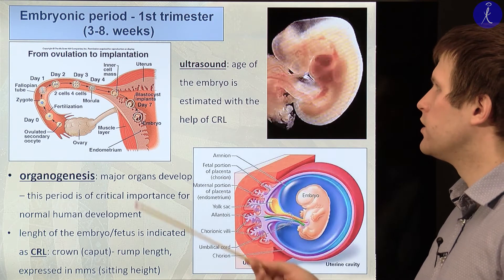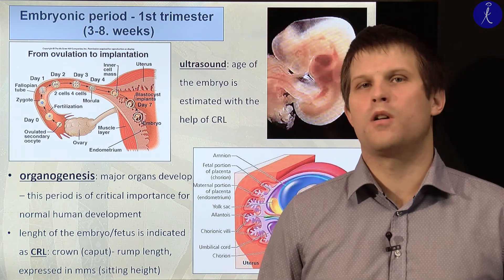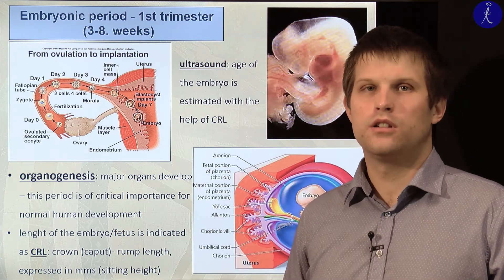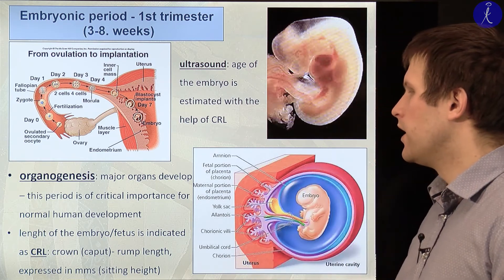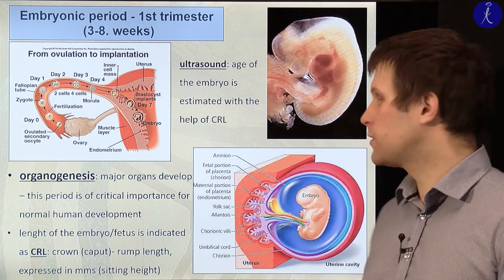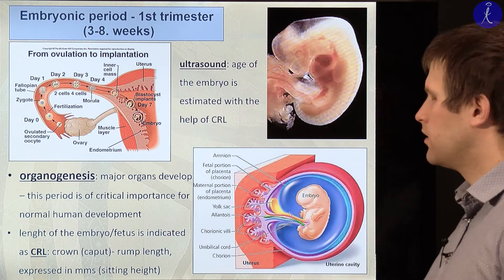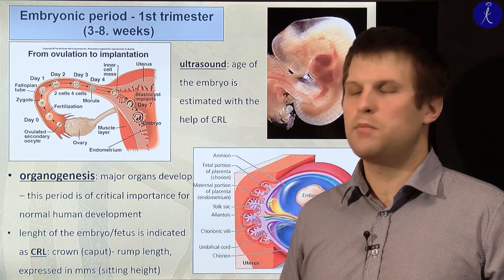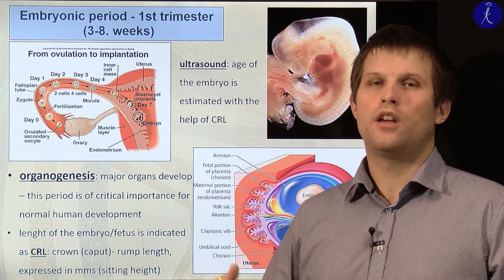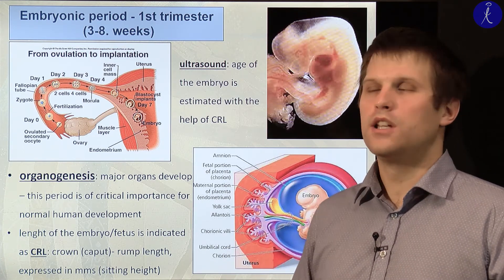During the three to eight weeks after implantation we have organogenesis — the major organs will develop such as the heart, liver, pancreas and others. This period is critical for later normal human development. During this time we frequently measure the crown-rump length, which is practically the top of the head to the bottom of the trunk. Since the limbs are flexed, we cannot measure the entire length of the baby, so we use the CRL to estimate the age of the embryo and check heart development.